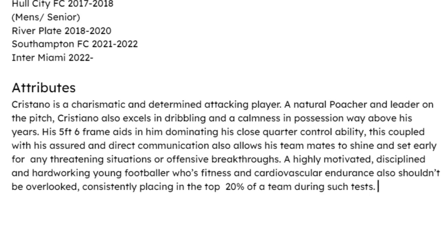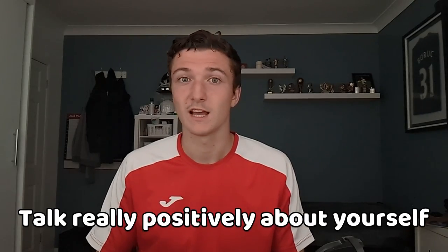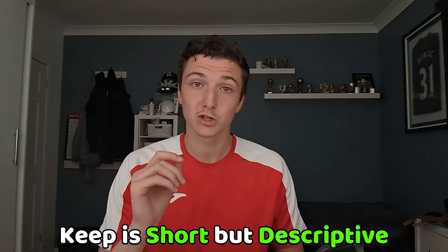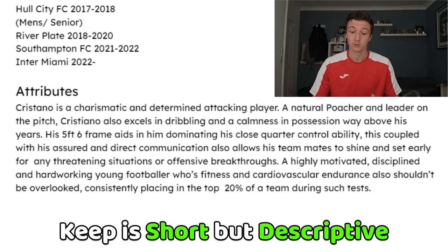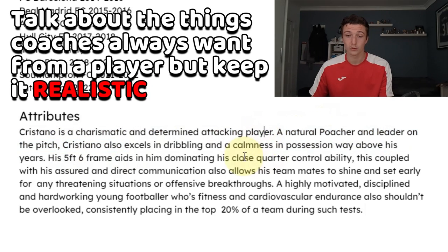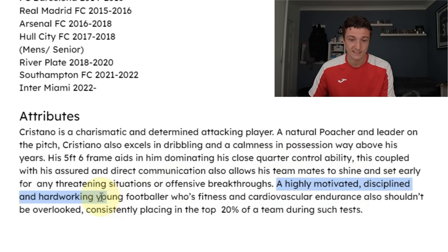After writing down your playing career, you move on to the attributes section. This is where your ego kicks in a little bit — you want to big yourself up, sound as if you are a world-class player. Keep this section short but sharp, writing directly about your specific strengths. Include things that catch a coach's eye, like being a natural poacher and leader on the pitch, or being highly motivated, disciplined, hard-working, and having good communication. Coaches love those qualities from a player.